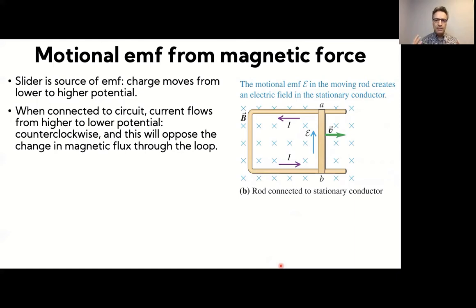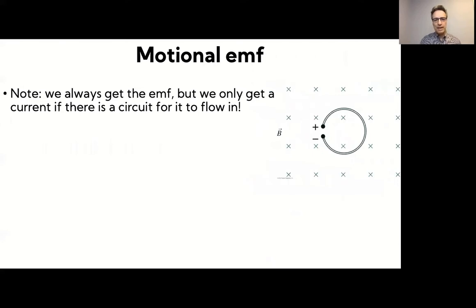Now, as is clear from considering the force on the charges, we will always get the EMF, but we don't necessarily always get the current. And so suppose that we have like a loop like this, but it's not a closed loop. It's actually open. There is a gap here in the middle. If you move this loop in the magnetic field...